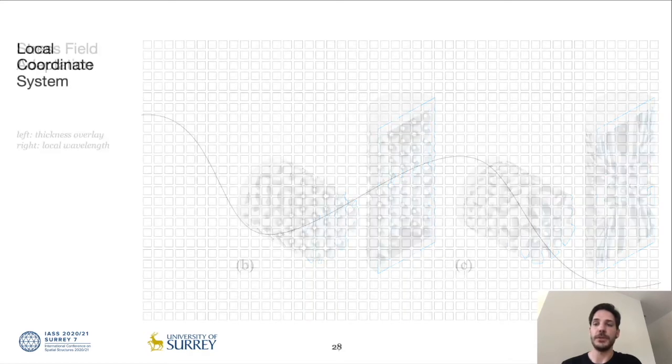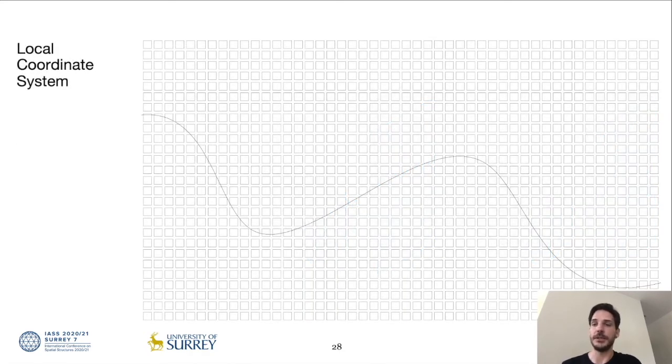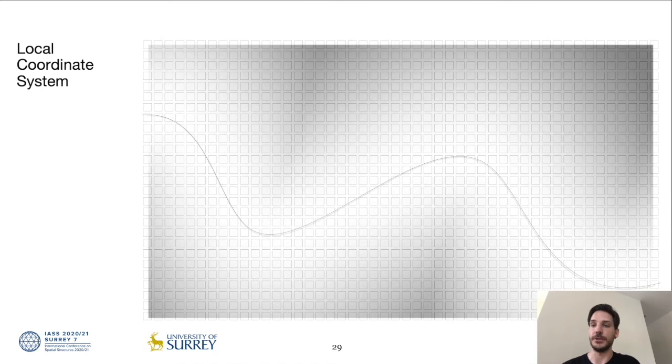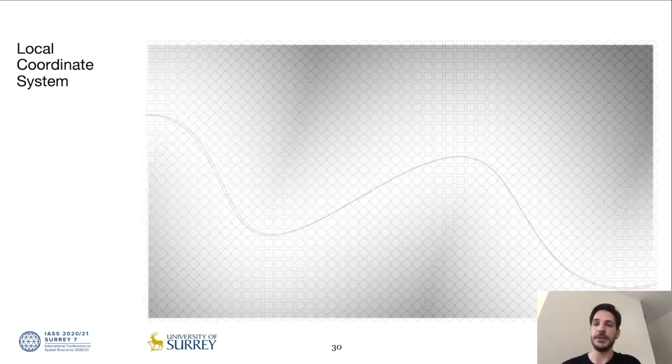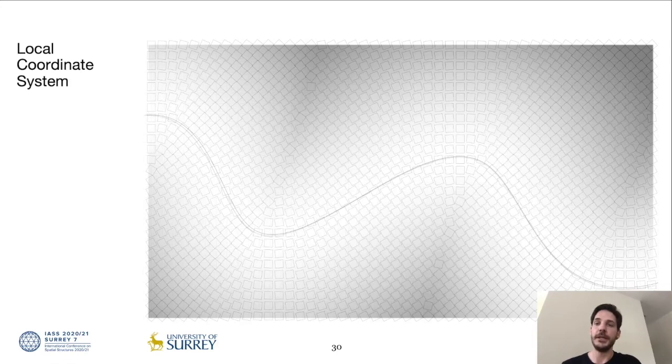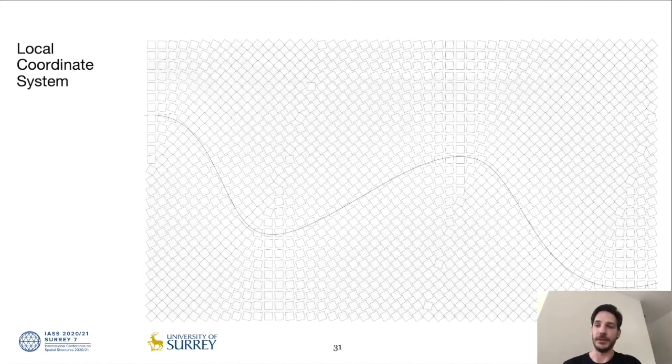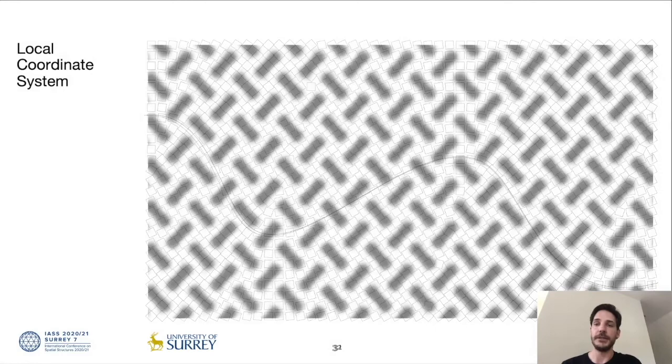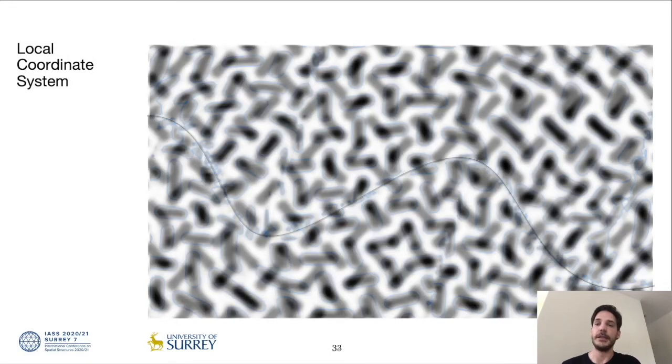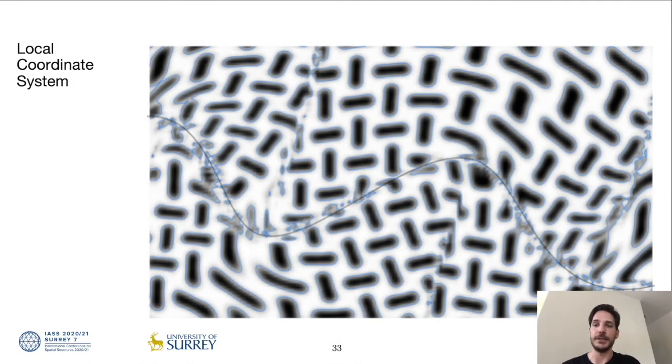We have shown that it is possible to change the type and orientation of the coordinate system globally. Currently under development is the option to modify the coordinate system locally as well. With the gradient vector of the scalar field input, the derivative of the distance function, we can rotate the coordinate system in each unit cell individually to align with the flow of the field. A regular lattice can thereby be turned into a lattice with locally adaptive coordinate systems.